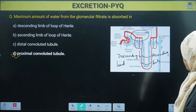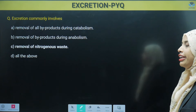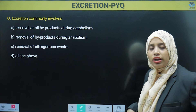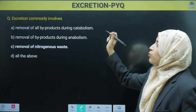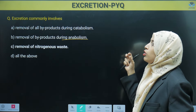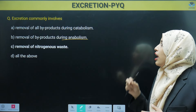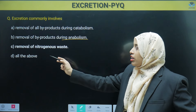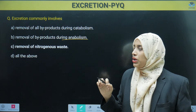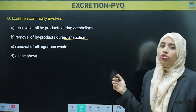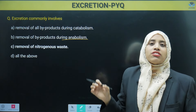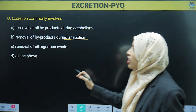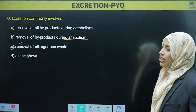Excretion commonly involves: removal of byproducts during catabolism, removal of byproducts during anabolism, removal of nitrogenous waste, or all of the above. Catabolism is a breakdown process; anabolism is a synthesis or building-up process. We know excretion involves maximum removal of nitrogenous waste from the body. So we can directly mark removal of nitrogenous waste.